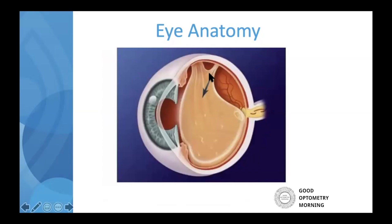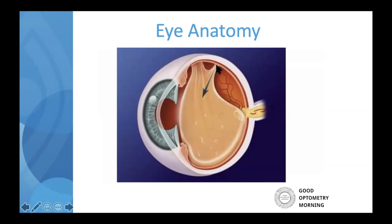Another key point is that this vitreous detachment process will often take a few months. When I see a patient for the first time with these symptoms, more often than not we don't see a tear or a break. I warn them that they likely have a partial vitreous detachment. As this diagram shows, there may be an area where the vitreous is separated but other areas still attached. I could see you one day with no tears, and the next day an attached area could cause a tear that needs to be addressed.